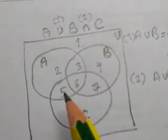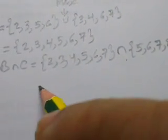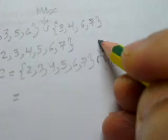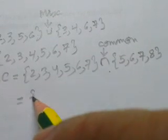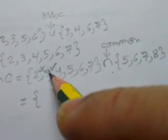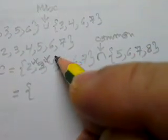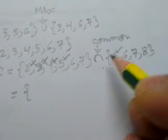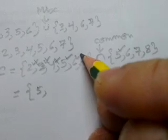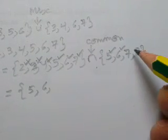C is five, six, seven, eight. Intersection means common elements. What is common? Two, not here, not common. Three is in the first set, not here, not common. Four, not common. Five, common. Six, common. Seven, common.